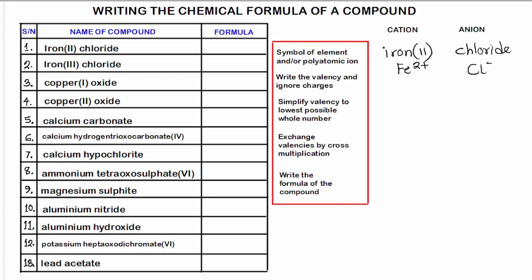The next step is to write the valency of the cation and anion and ignore the charges. The valency of iron in this case is 2, while the valency of chloride is 1. Ignoring the charges means we write 2 instead of 2+ and 1 instead of −1.